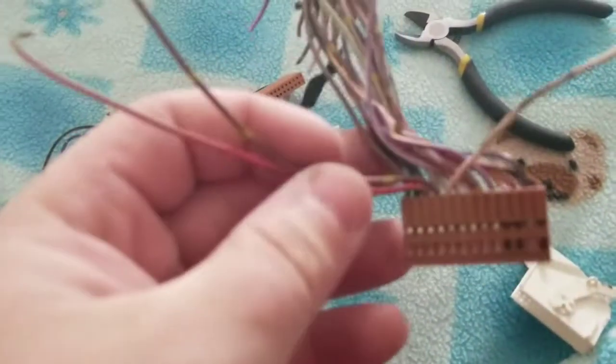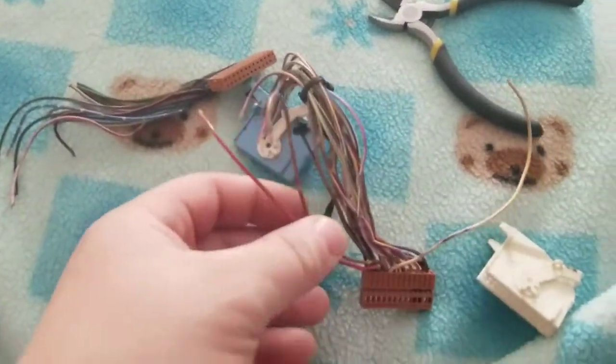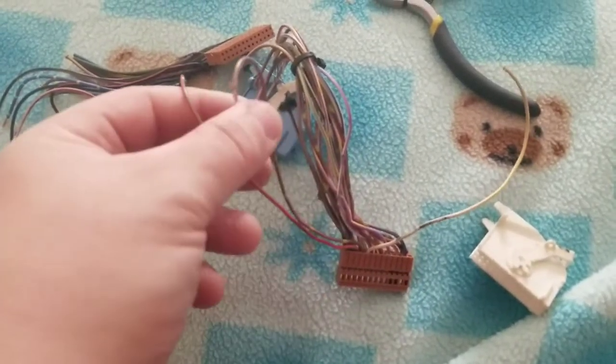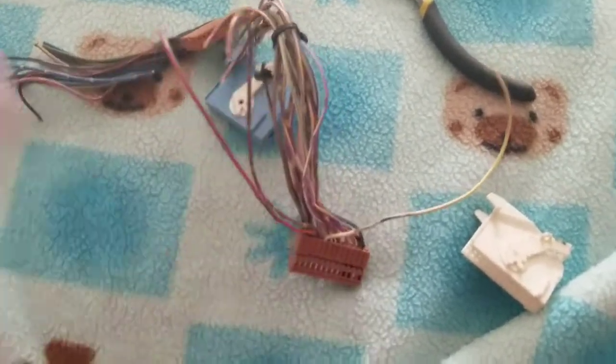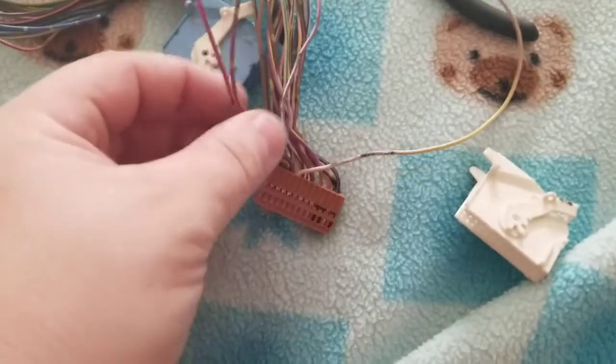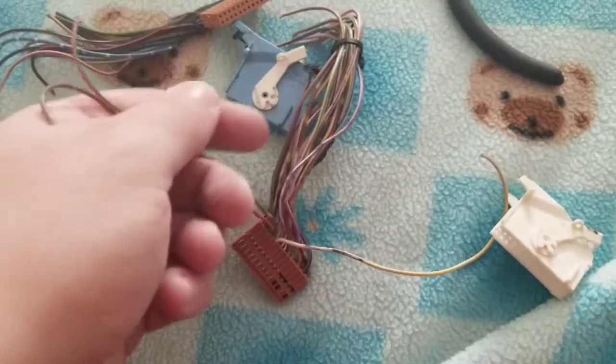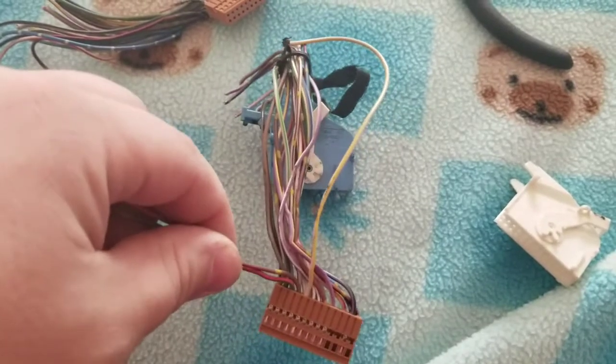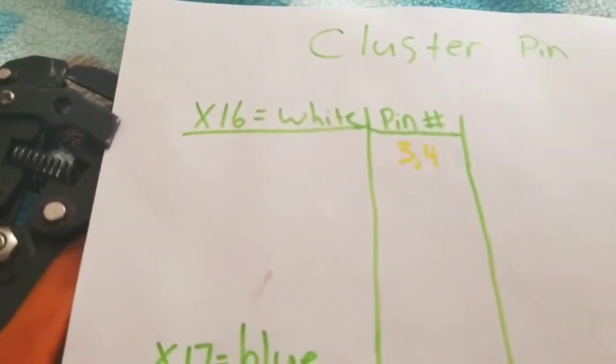Here's pin number three and number four, your left and right turn signal indicator. All I'm going to do is I'm going to take these off this side right here, not cut any of these because you never know I might need these. And then yeah, just keep these off to the side so I know which ones I need for that one. So that is the X16 white clip.